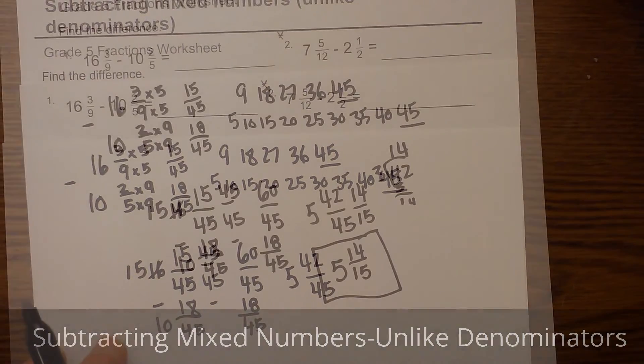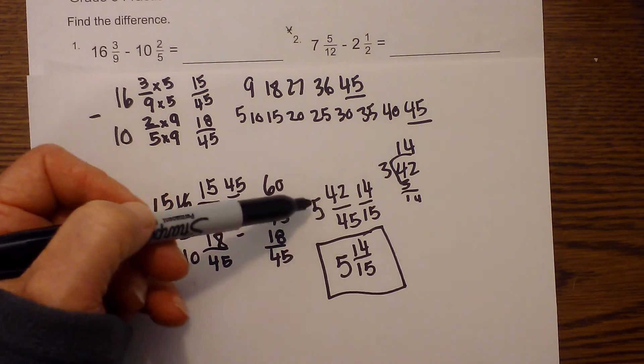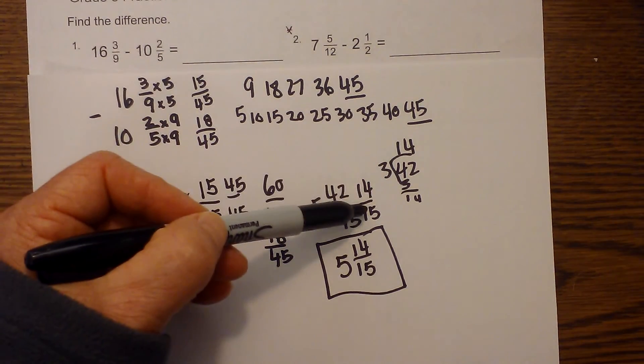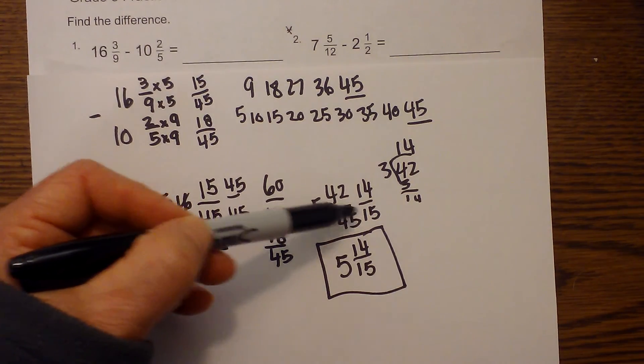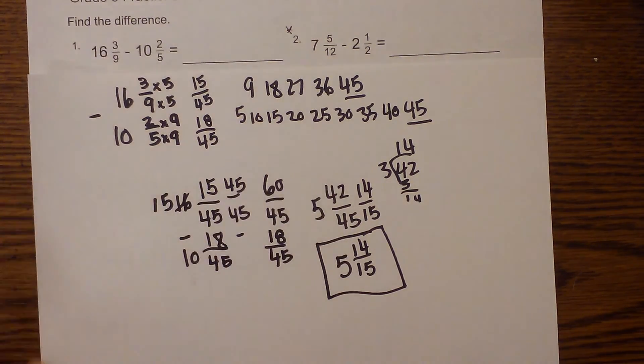Well, let's see here. What will go into both of those? Okay, three will go into 42 and 45. Three goes into 42 fourteen times, and three goes into 45 fifteen times. So it becomes five and fourteen fifteenths.